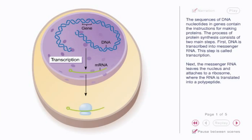Next, the messenger RNA leaves the nucleus and attaches to a ribosome, where the RNA is translated into a polypeptide.